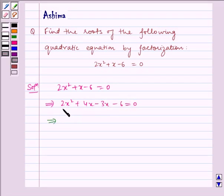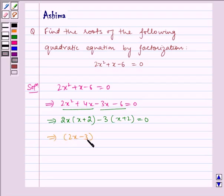Taking 2x common from the first two terms, we get x + 2. Taking -3 common from the last two terms, we get x + 2. This implies (2x - 3)(x + 2) = 0.